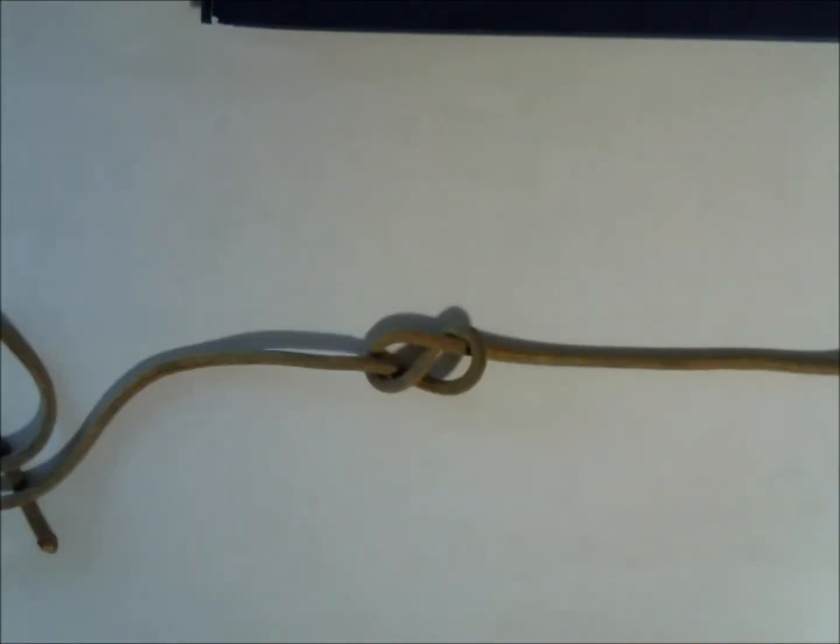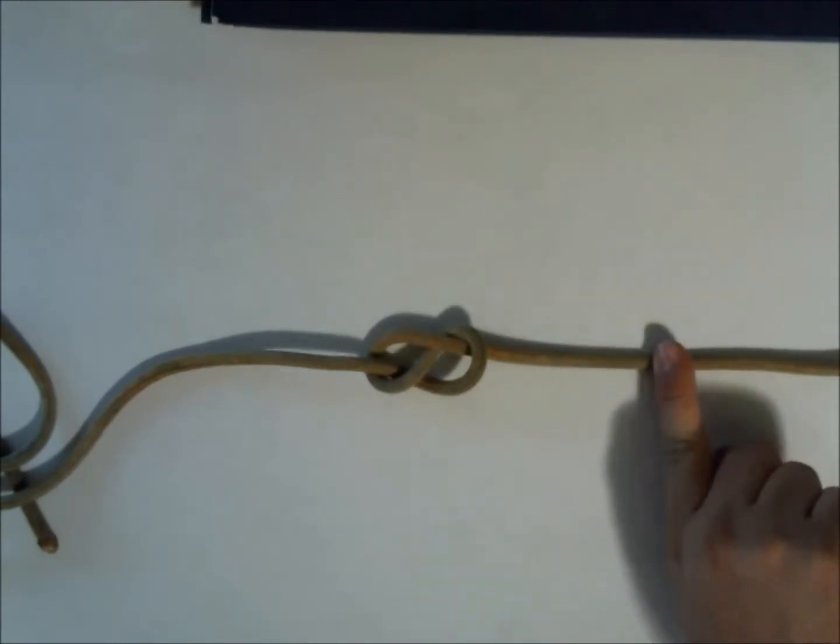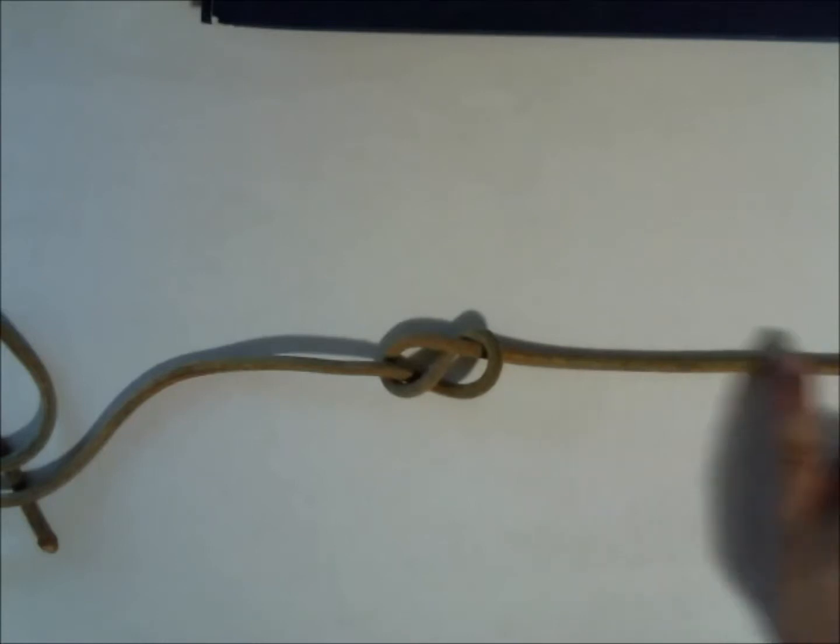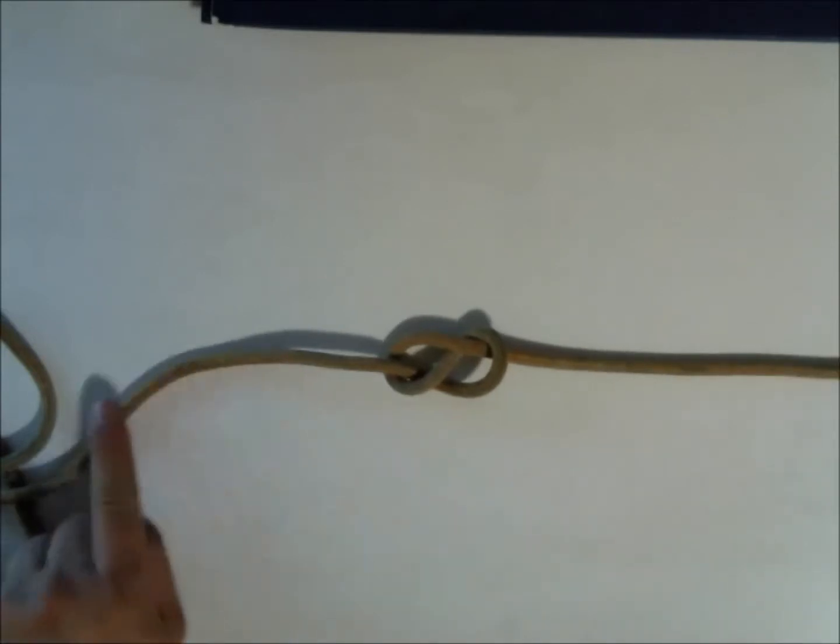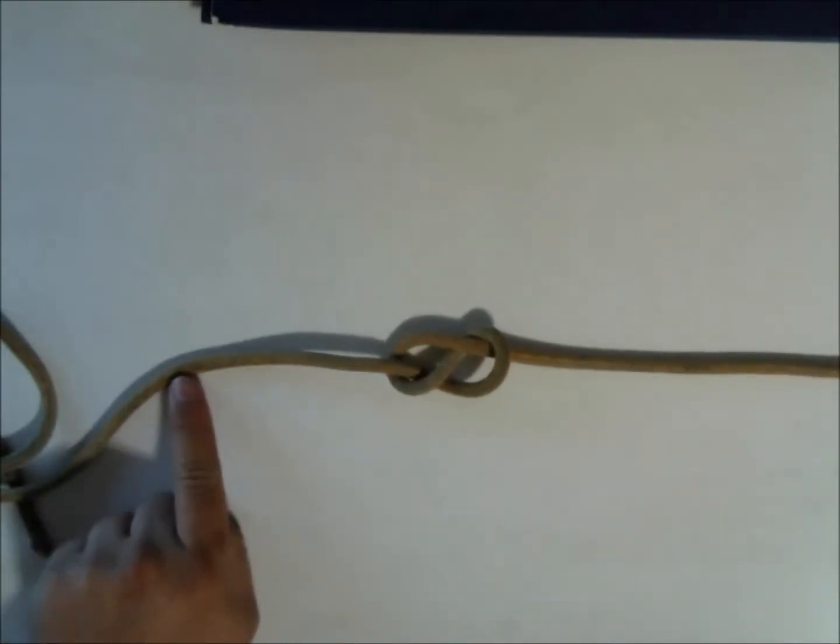Now that I have a figure eight knot, I'm going to decide that this is the side that's going to go to whatever I'm tying to. If you're a rock climber, this would be like your harness side, and this will be whatever I want to anchor to, like a rock, a boulder, a tree, whatever I want to hold in place.